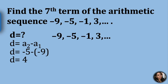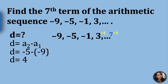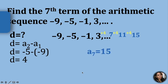In order to get the seventh term, we need to get the fifth and the sixth term first. To do that, we will just add this common difference to our fourth term. So 3 plus 4 is equal to 7, 7 plus 4 is equal to 11, and 11 plus 4 is equal to 15. Our a sub 7 here is 15.